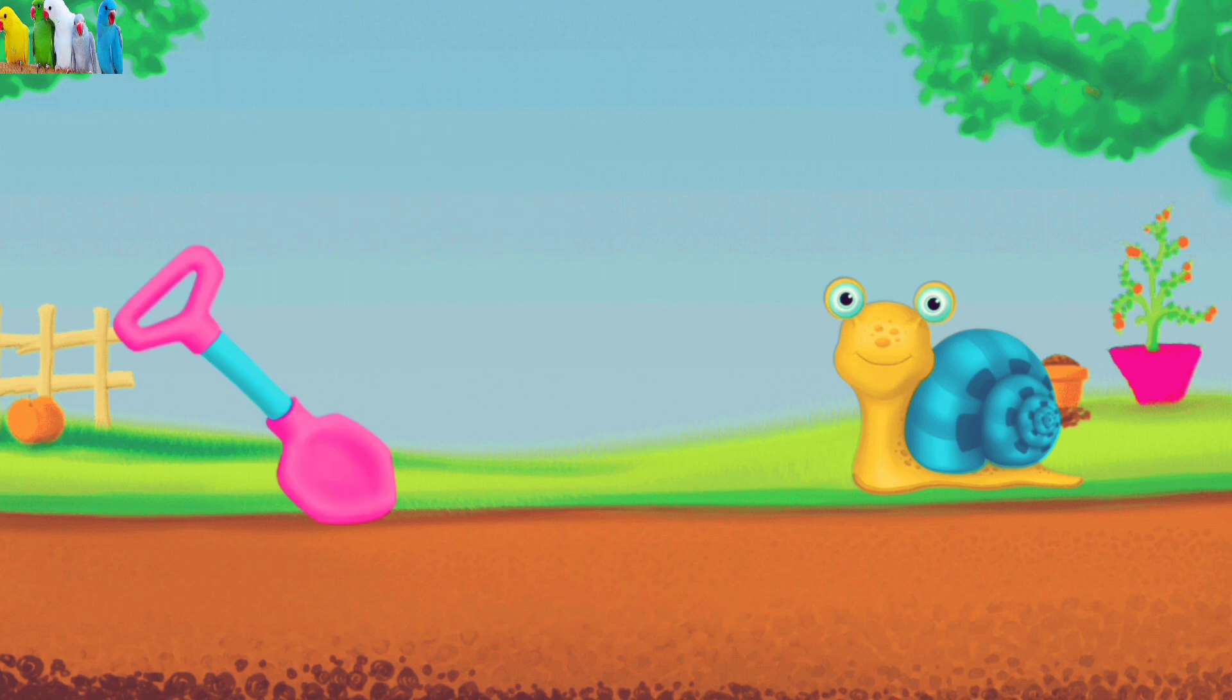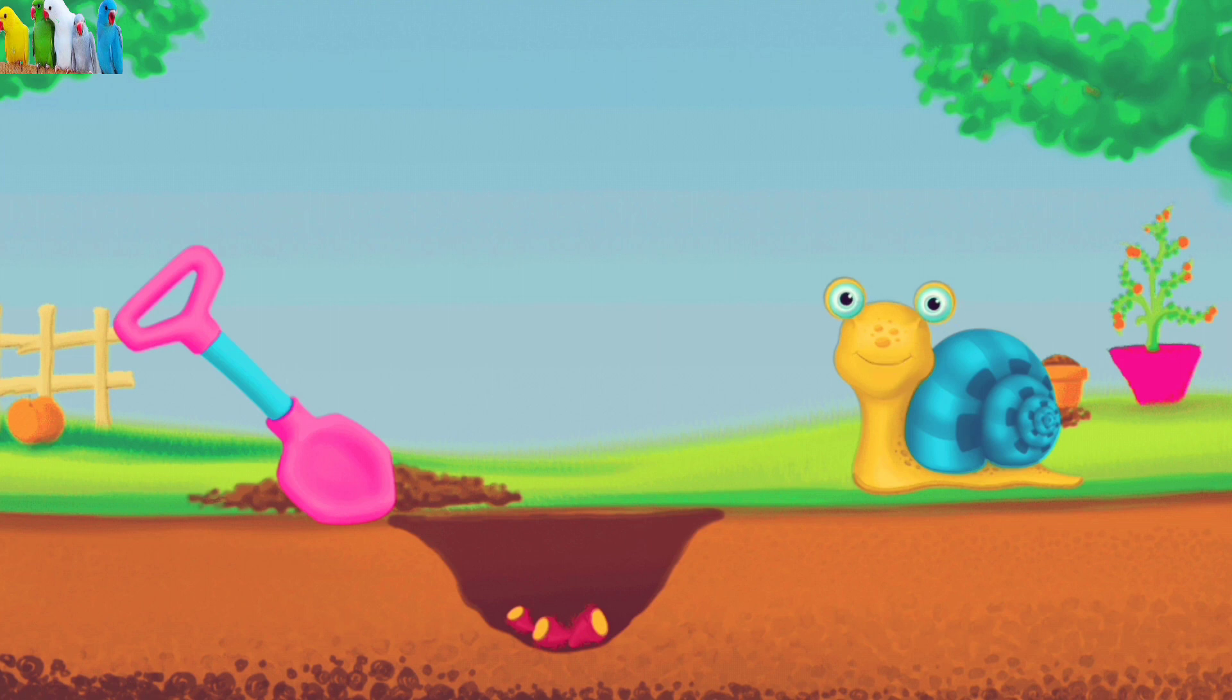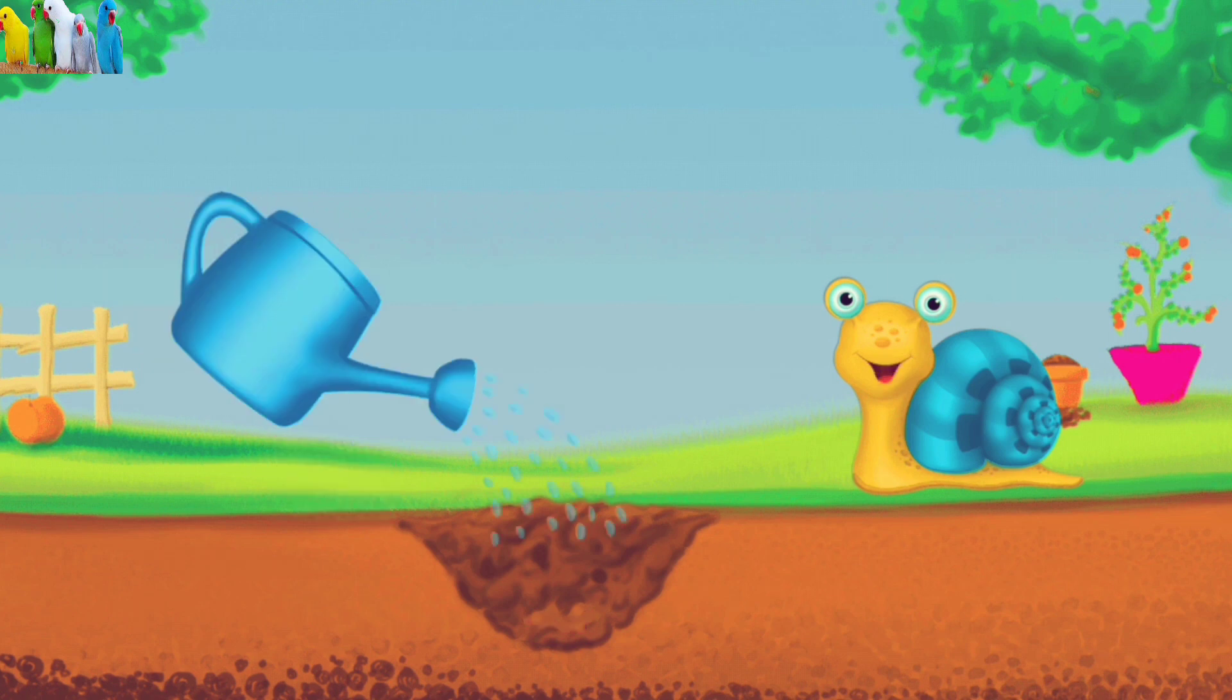Okay, we choose the plant which seeds we want to grow. First dig up a hole, throw seeds, we choose root. Okay, fill up the hole, and do the watering.